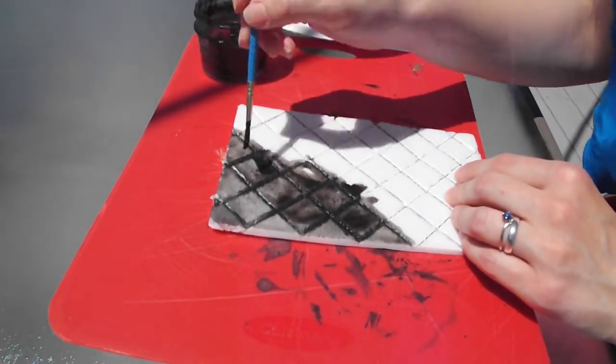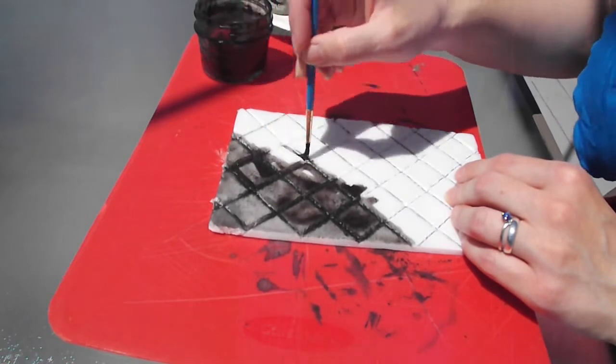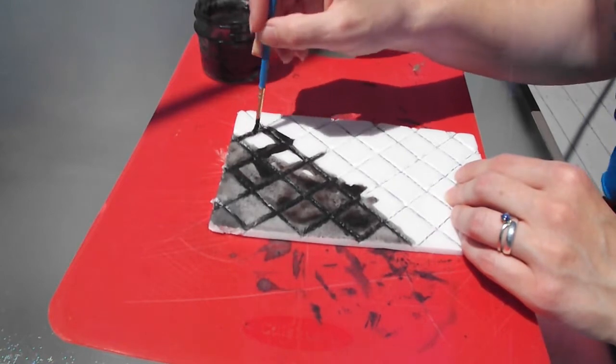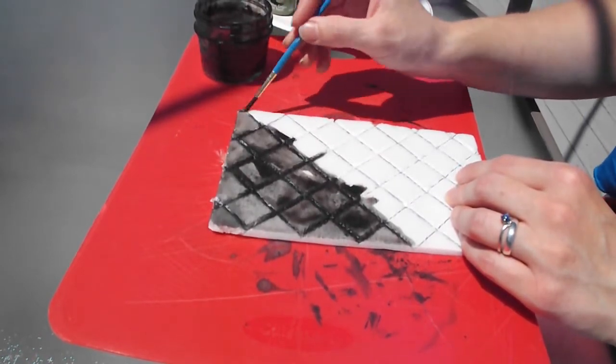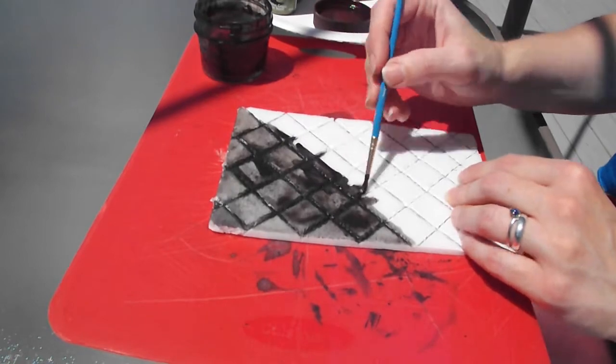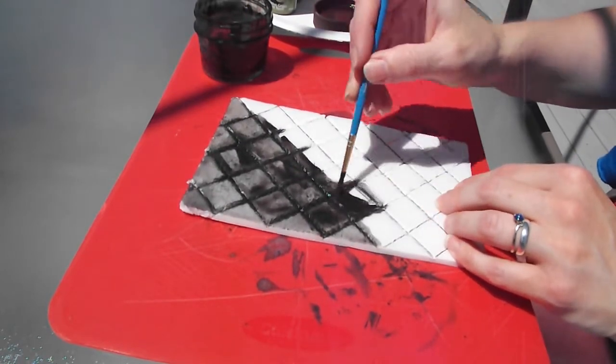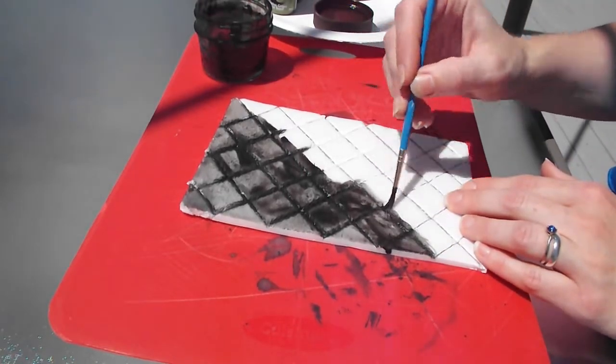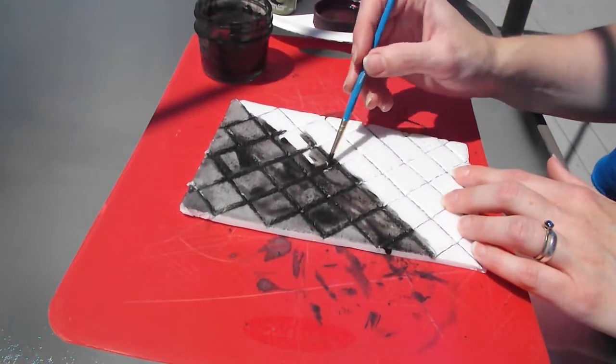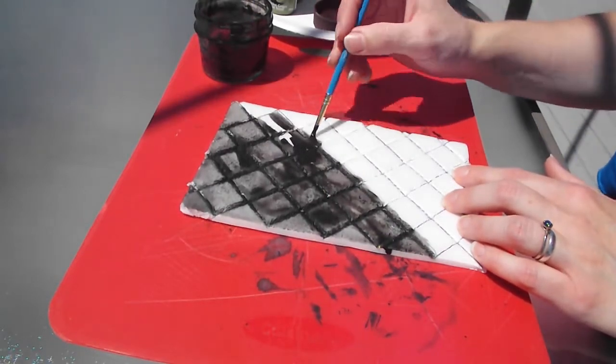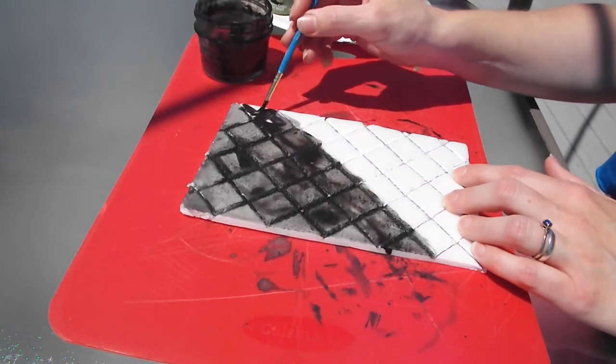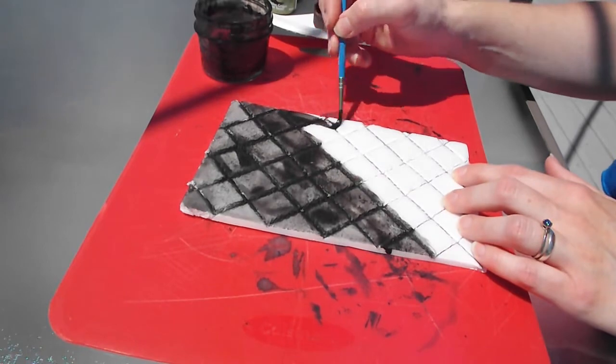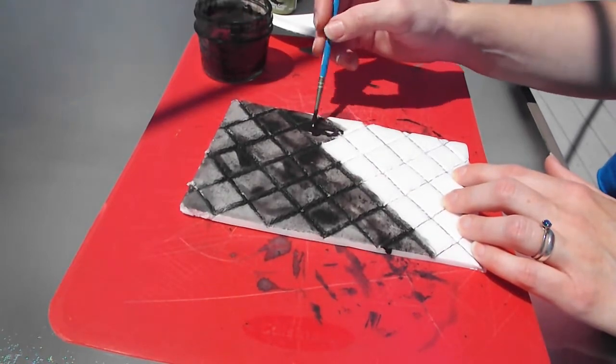So you just want to be sure that you take your black wash and you really want to stress getting it more into the lines of the grout first and then just sort of working the excess over the tiles themselves. And by doing that, as you can see, as it dries, you get the darker edges with a more gray top to the tile, which is what's going to give you that really sharp finish at the end.